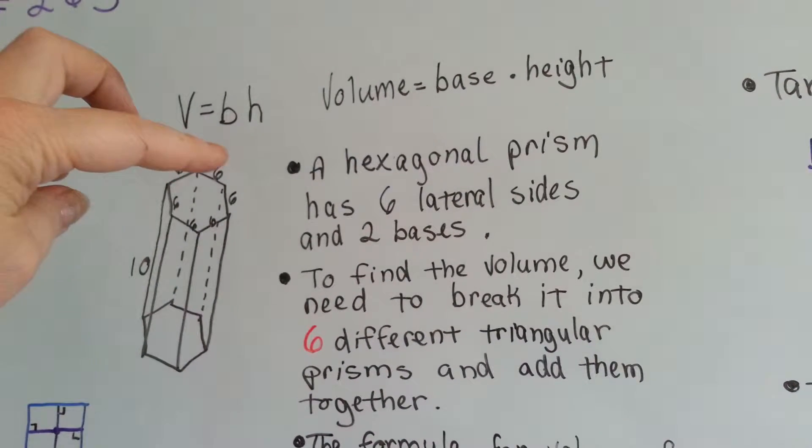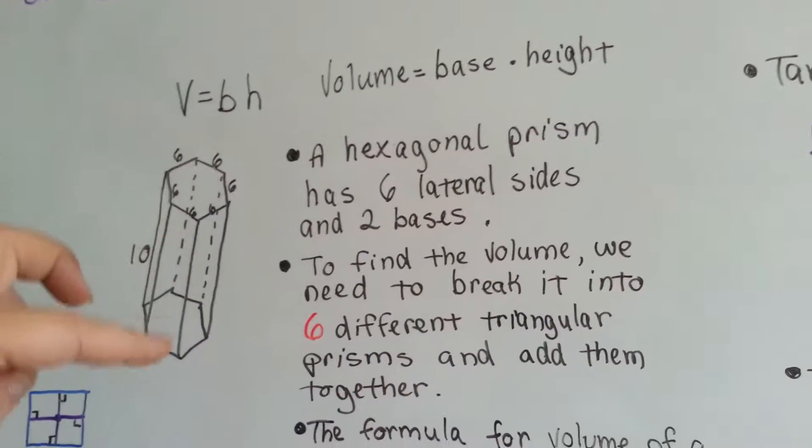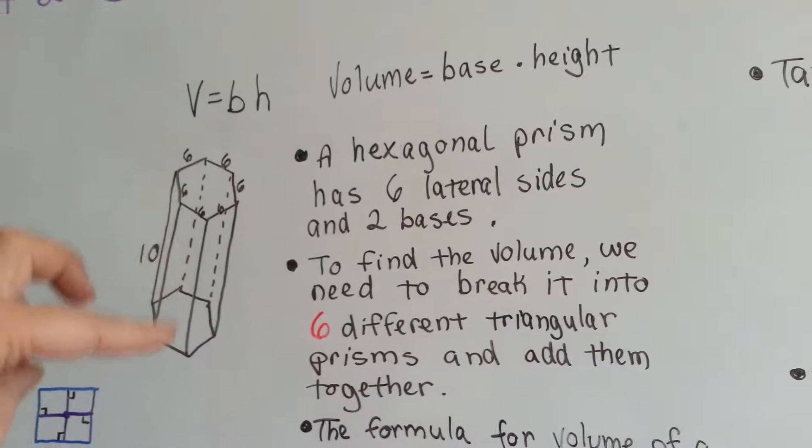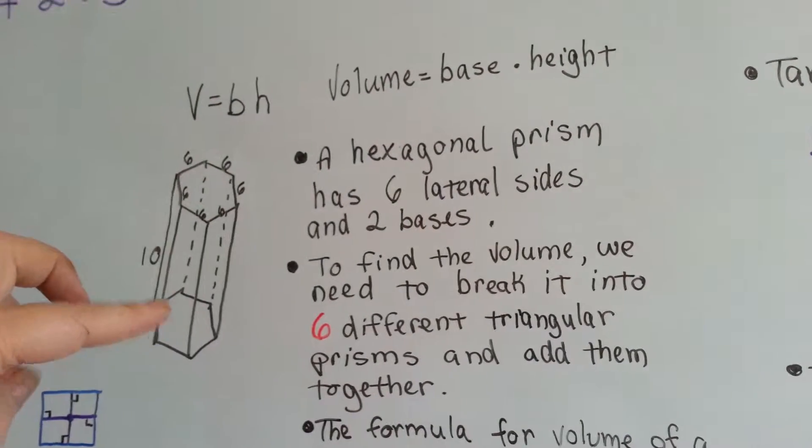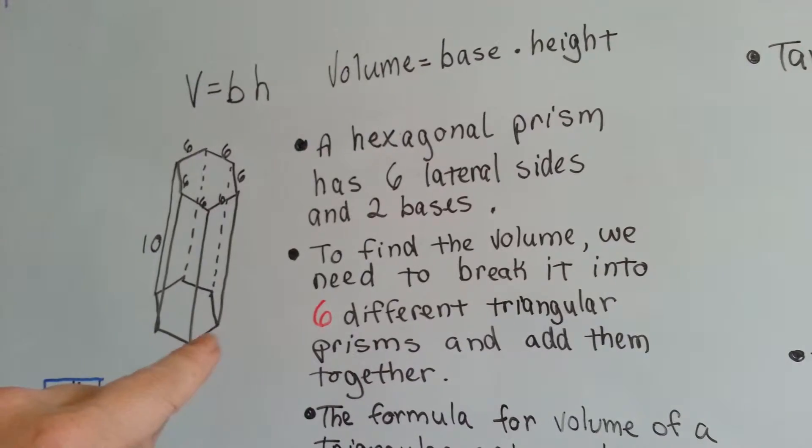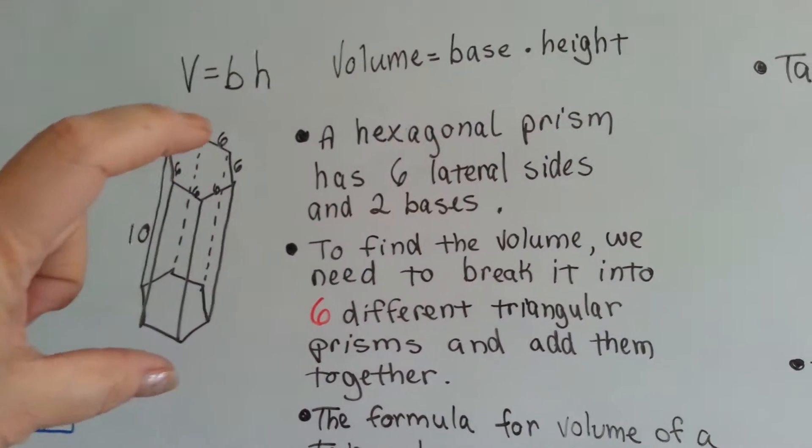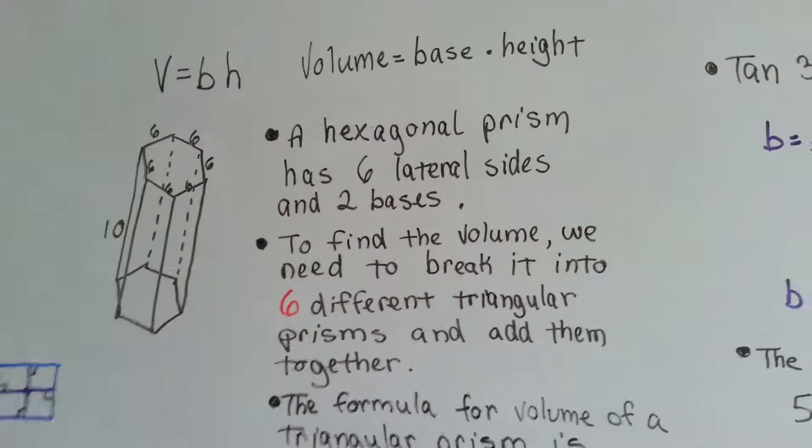That side's six, that side's six, that side's six, and then the height of one of these lateral sides is ten. So these are all equal. We've got two bases and six lateral sides.